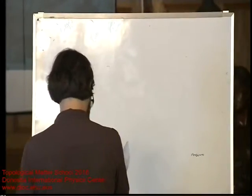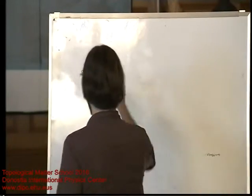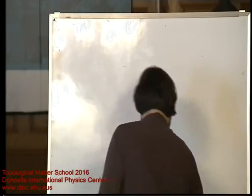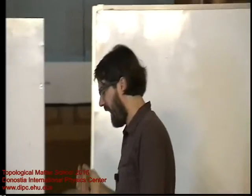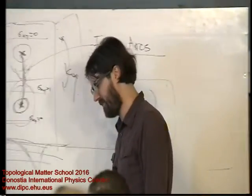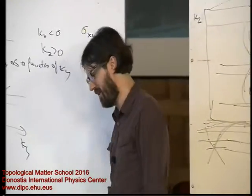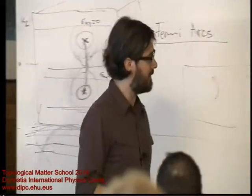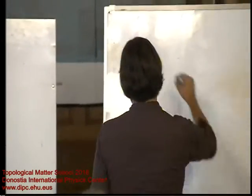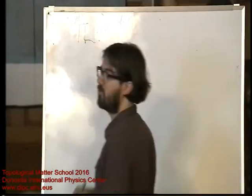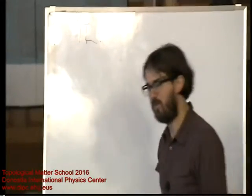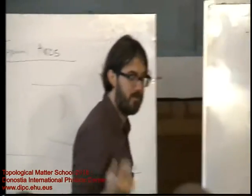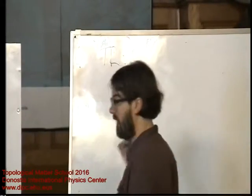Now, any condensed matter system has Fermi arcs. You don't have to specifically find Weyl nodes — in any condensed matter system with time reversal symmetry, it will have Fermi arcs. The point is how big are they? Any time-reversal invariant system without inversion symmetry will have Fermi arcs.